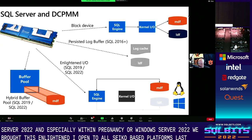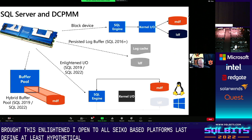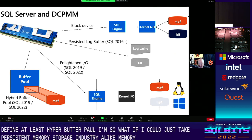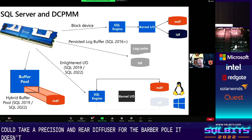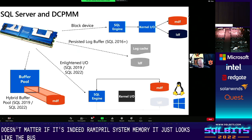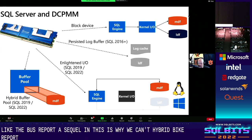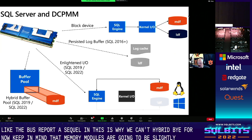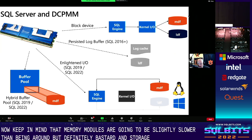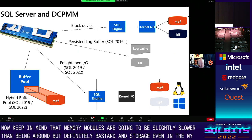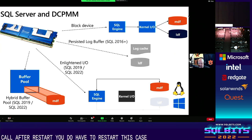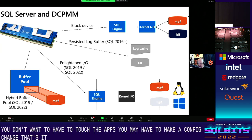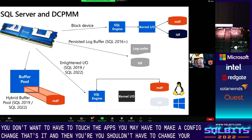Last, definitely not least, is Hybrid Buffer Pool. What if SQL Server could just take persistent memory storage and treat it like memory? The concept is: take your persistent memory and use it for the buffer pool. It doesn't matter if it's in DRAM or persistent memory — it just looks like the buffer pool to SQL, which is why we call it hybrid buffer pool. Persistent memory modules are slightly slower than DRAM but definitely faster than storage. To enable it, just run an ALTER SERVER command and enable the hybrid buffer pool after a restart — no application changes needed.